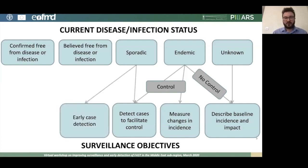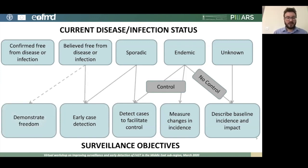If the disease is sporadic in your country, you have a slightly different approach. You don't measure the change in incidence, but you still want to detect cases to facilitate control, and you also want early case detection. If you believe you're free from disease or infection, you want surveillance in place to detect cases early if they occur, and you may also want to demonstrate freedom from disease — though there must be an economic case for that, as it can be a substantial investment, usually justified by trade benefits.